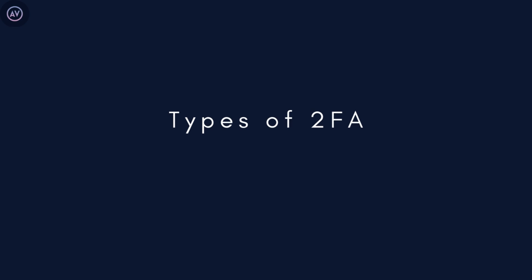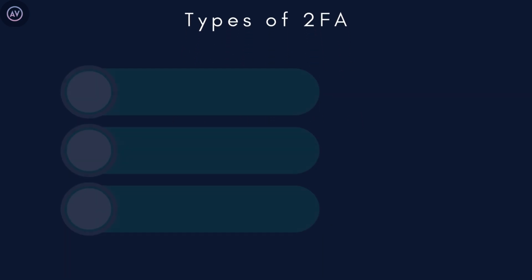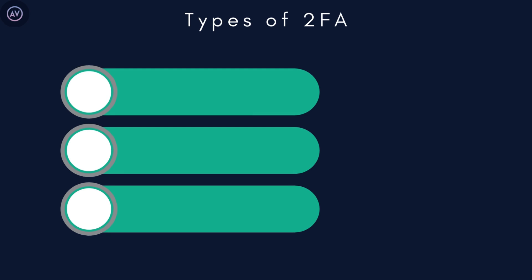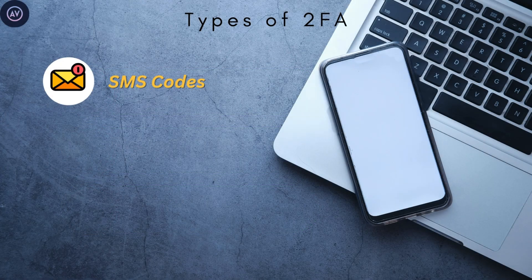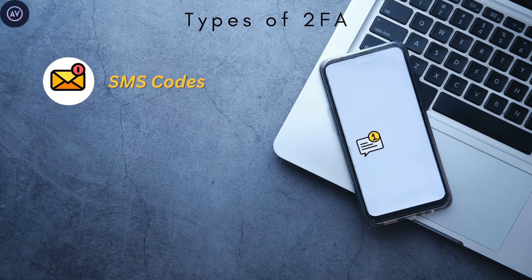So what kinds of 2FA are there? You have a few different options depending on what the platform supports. Number one: SMS codes. You're probably familiar with this one — when you log in, the service sends a text message to your phone with a code. You enter that code and you're good to go. This method is easy to use, but it's not the most secure, since if someone has access to your phone or SIM card they could intercept those codes.